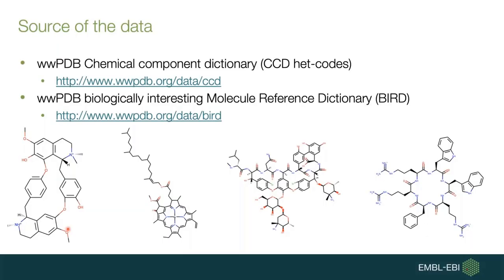There are two main sources of data for this package. The first is the WWPDB Chemical Component Dictionary, which contains all the ligands commonly found in the Protein Data Bank, including drug molecules and cofactors. Another source is the WWPDB Biologically Interesting Molecule Reference Dictionary, which contains all the polypeptides or oligosaccharides that can also be found in the Protein Data Bank and are formed from those chemical components.